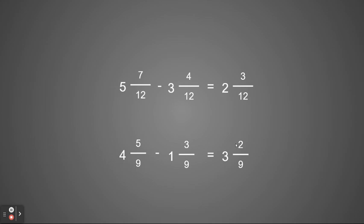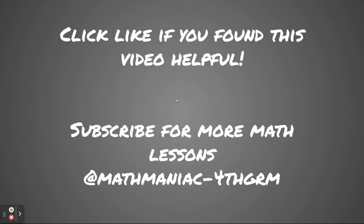When adding and subtracting mixed numbers, you're going to start by adding or subtracting the whole numbers and then adding or subtracting the numerators, as long as the denominators are the same — and if subtracting, make sure the numerator in the first number is larger than the numerator in the second. I hope this was helpful. Click like below and subscribe for more lessons from the Math Maniac. Have a great day!